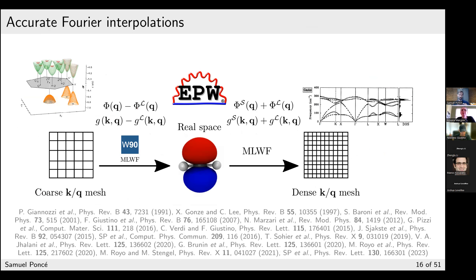One way to deal with dense sampling is to use interpolation — the idea behind the EPW software. Quantities like the dynamical matrix and electron-phonon matrix element are computed on a coarse grid using perturbation theory. We then remove the long-range interaction and Fourier-transform them to real space. Since real-space quantities must be localized for accurate Fourier interpolation to very dense grids (otherwise we get Gibbs oscillations), we remove the long-range part, add back an analytic form, and compute the phonon band structure or electron-phonon properties at arbitrary k and q points at low computational cost.